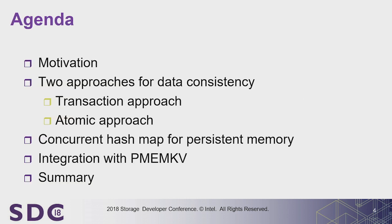This is the outline of the presentation. At the beginning I will describe our goal — why we decided to do this work. Then we will look into two approaches to support data consistency when developing concurrent data structures. Then I will present a concurrent hash map for persistent memory. We have a lot more stuff privately, but since it's a public conference, I'm allowed to present only what's already public. At the end I will show how this data structure is used in PMKV — our persistent memory key-value storage.